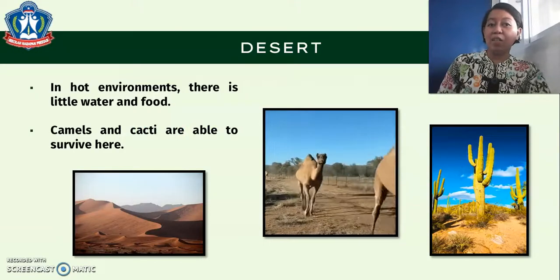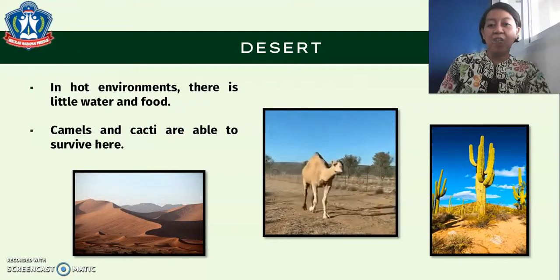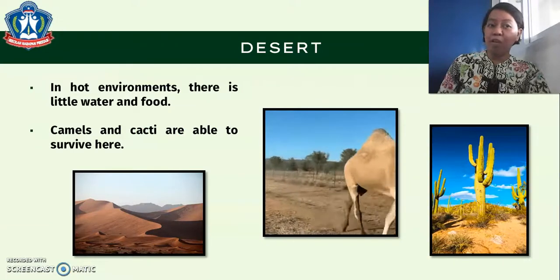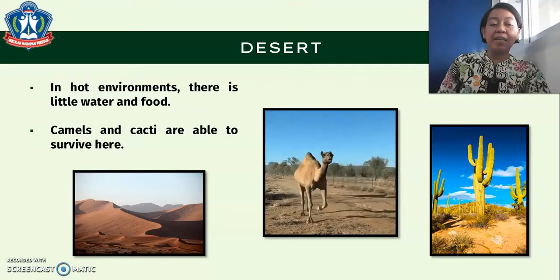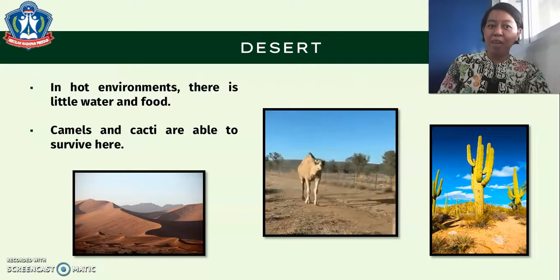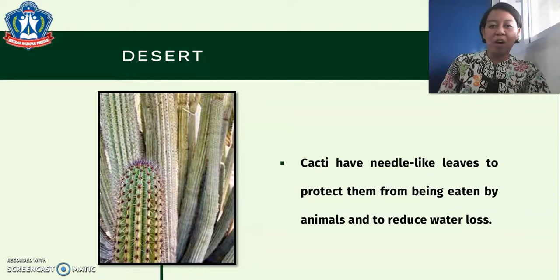First, let's learn about the desert habitat. In hot environments, there is little water and food. Camels and cacti are able to survive here. In a desert, the cacti have spike-like leaves to protect them from being eaten by animals and to reduce water loss.